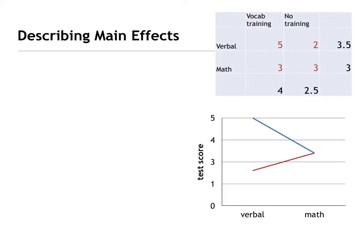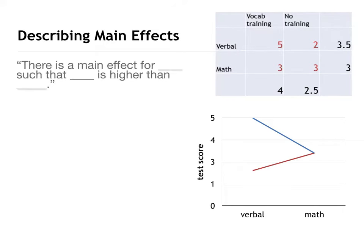First let's talk about describing a main effect. Your book gives you a template: there is a main effect for blank, such that blank is higher than blank. So here we have vocabulary training versus no training, and then verbal scores versus math scores.